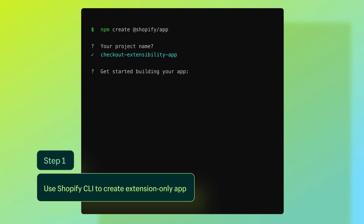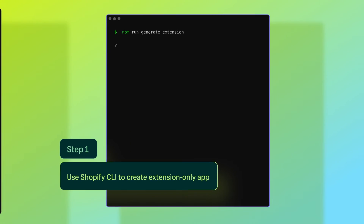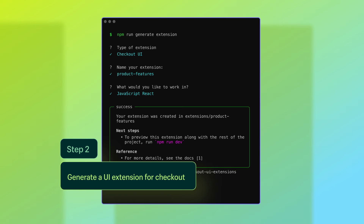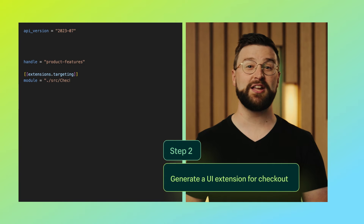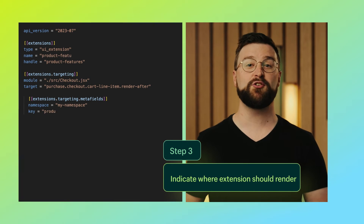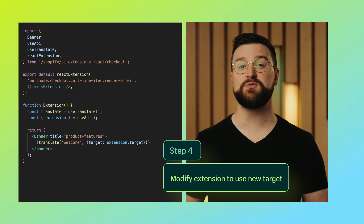Let's walk through an example where we'll quickly build a checkout UI extension that dynamically renders product metafields under each cart line in checkout. In your computer's terminal, use the Shopify CLI to create an extension-only app. Within the app, generate a UI extension for checkout using the language you prefer — in this case, we'll use React. In the configuration file, we'll indicate where we want the extension to render by providing a target and including the metafields we need. We'll also modify the extension itself to use the new target.